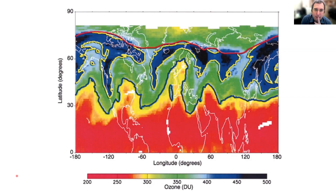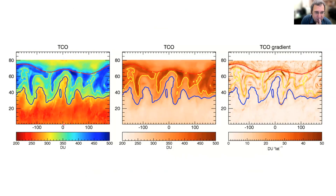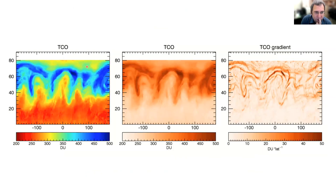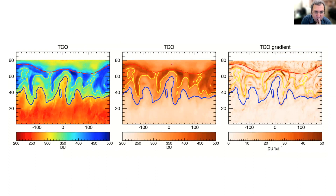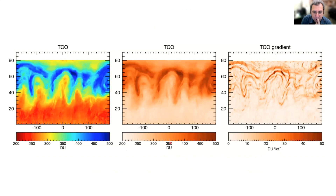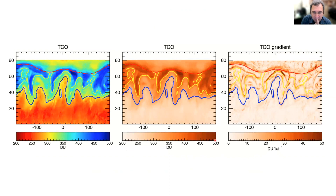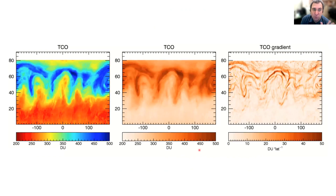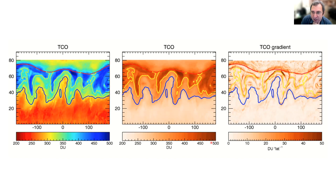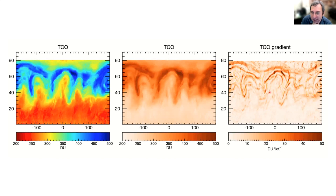You could actually take that same data and do it in the rainbow color map like we saw before, or use one that has a perceptual ordering — here going from white all the way up to dark red. Things that look very dramatic in the rainbow but don't really have much meaning aren't there when you look at the perceptually ordered color map in the middle.